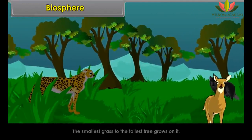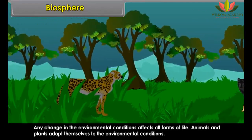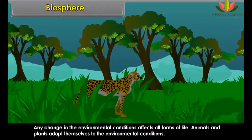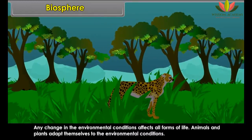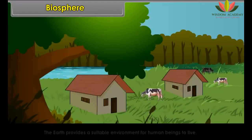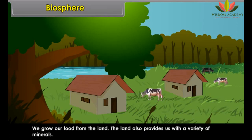The earth is called the blue planet because it is the only planet that has water. It looks blue from space because of water on it. Biosphere is the narrow zone of contact between land, water and air comprising all forms of life.